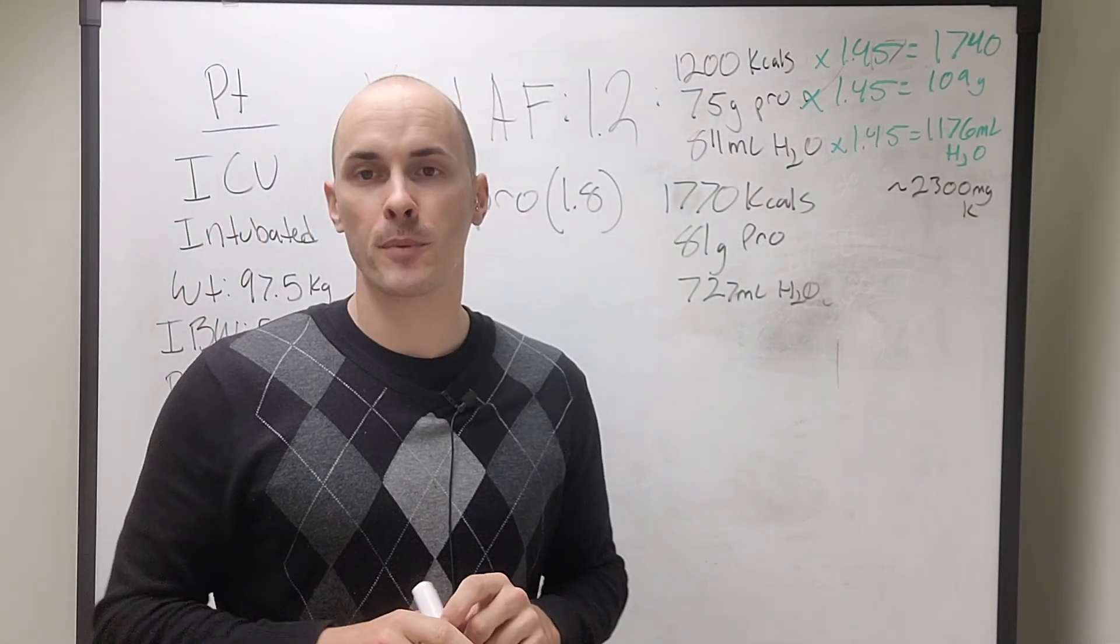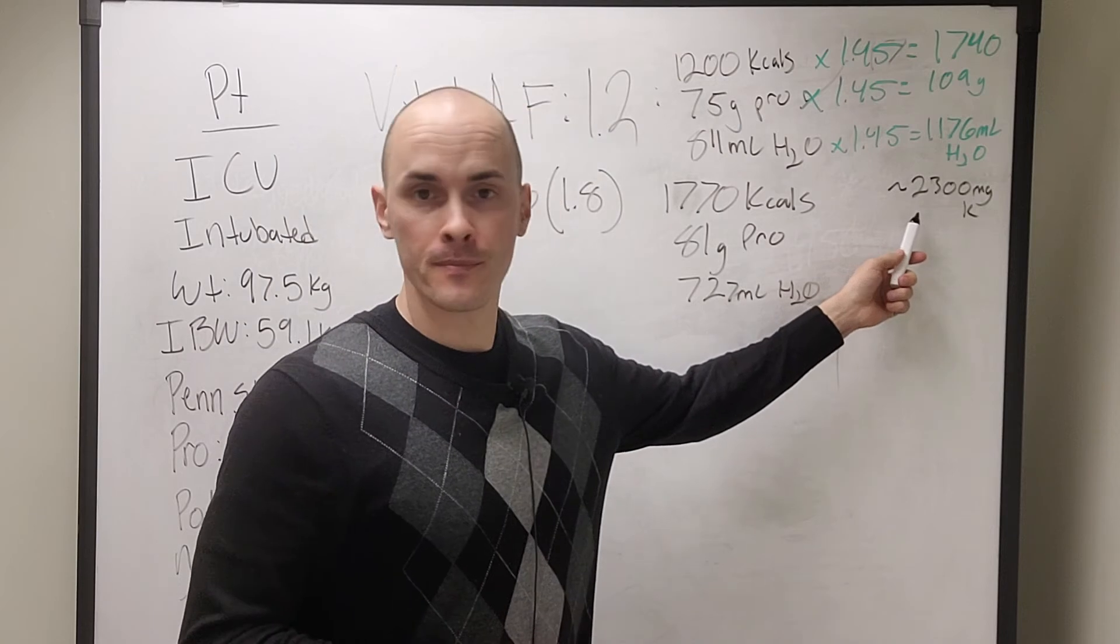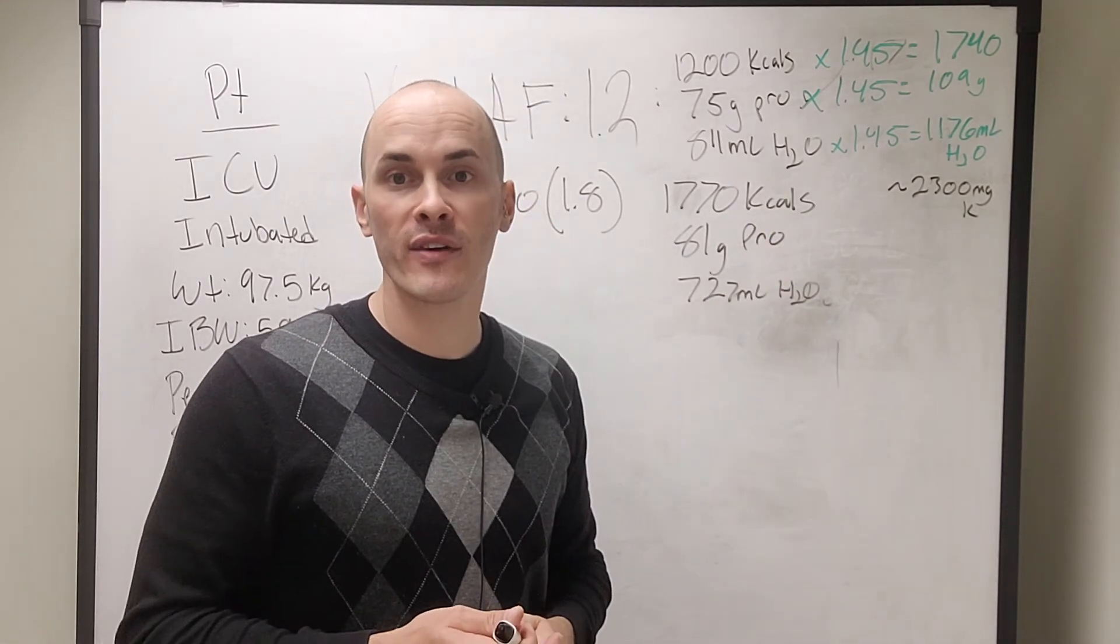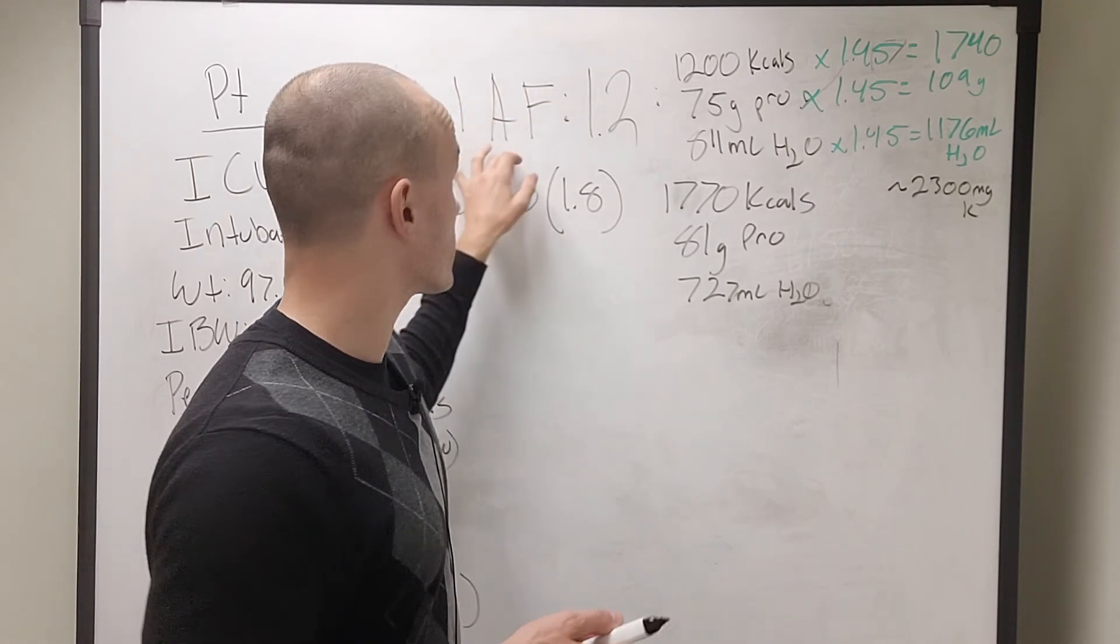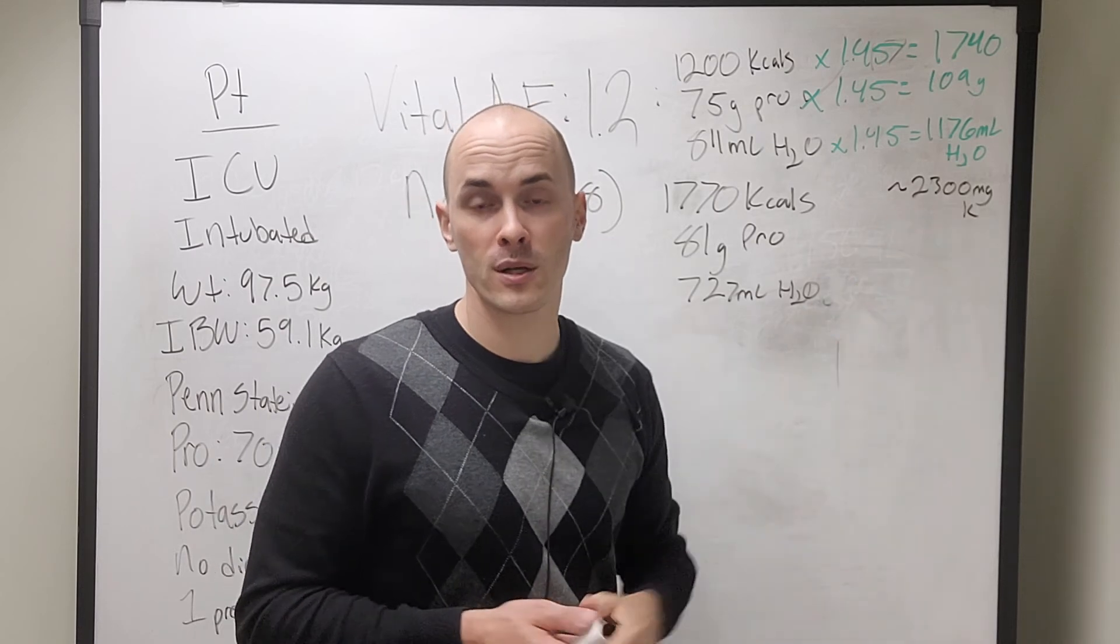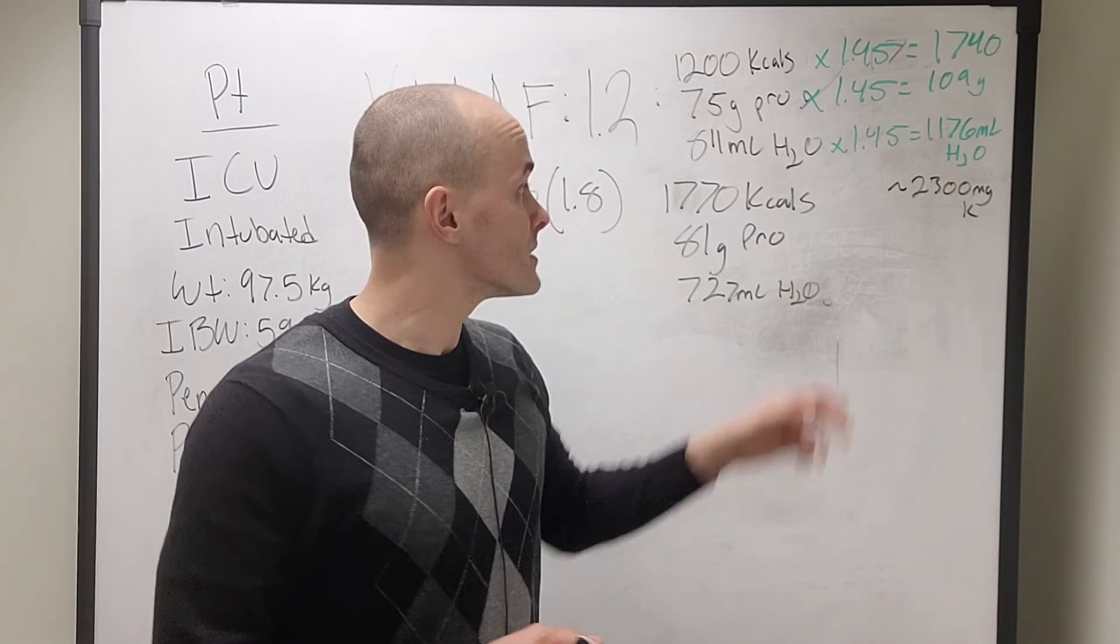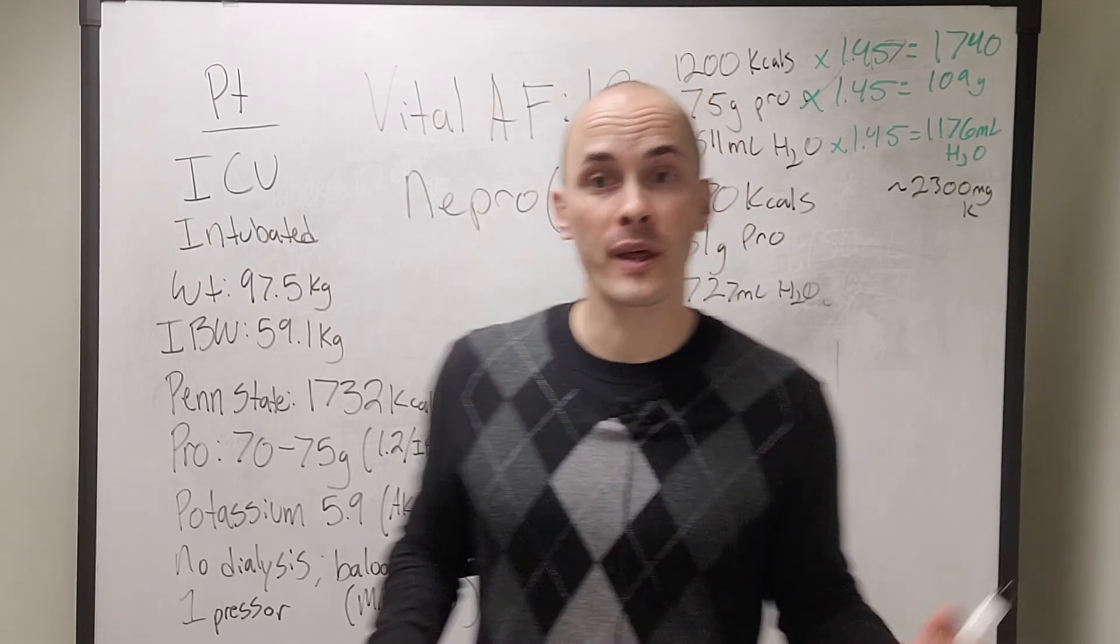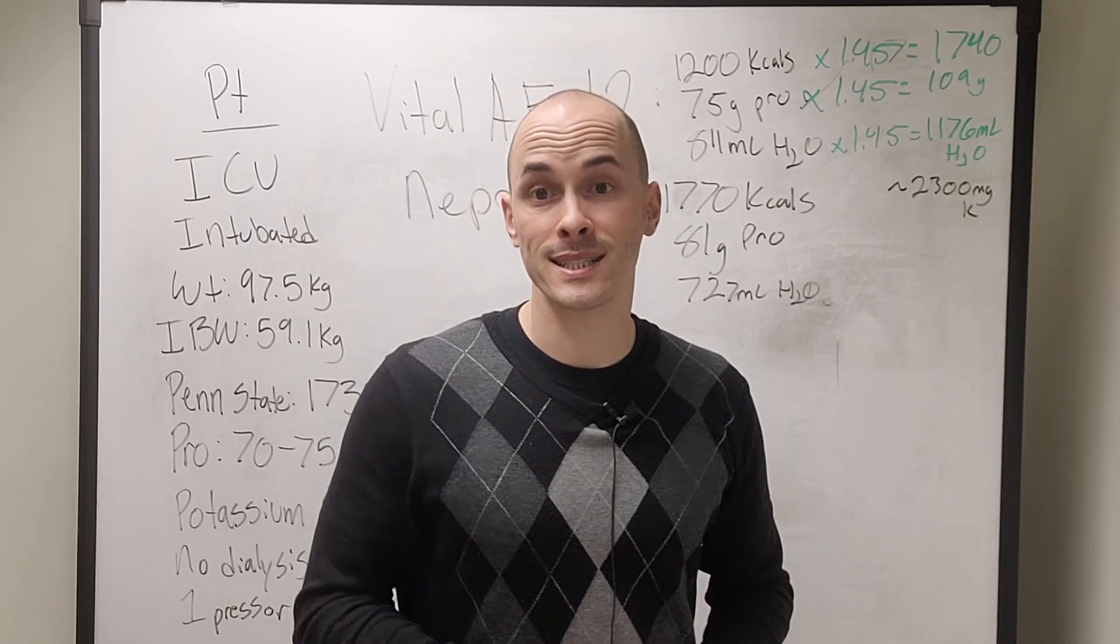The next part of the equation is going to be looking at Nepro. Before we look at that, on our formulary, it tells us how much potassium per liter is in these bottles. So for these patients that do have elevated potassium, I will do the math to figure out how much potassium they'll get from these formulas. So vital AF, if we give this patient 1.5 liters, we'll give them about 2300 milligrams per day of potassium. Typically for our renal patients, we want to keep it to around 2000 or less. This is a little bit above that, but it's not bad. If we see that this potassium is creeping up, then I'll definitely choose a formula that's lower in potassium.